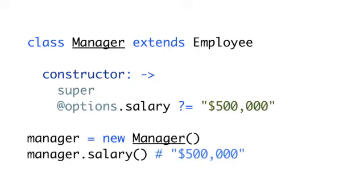And you notice in the constructor, we're actually calling super. And what that's going to do is call the super constructor on the employee class, so it's going to make sure that there is a default option set. Now, if we create a new manager and we call salary, that manager is going to get a default salary of $500,000.